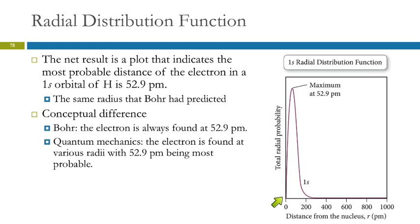As we move away, there is a steeply increasing probability of finding the electron. It's going to max out for hydrogen at 52.9 picometers, and then it drops sharply off again.